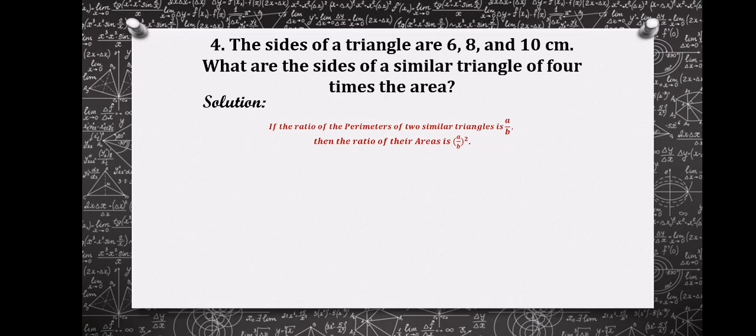Now the area of the given similar triangle here is 4 times the area of the first triangle whose dimensions are 6, 8, and 10 centimeters. So the ratio of their area should be 4.